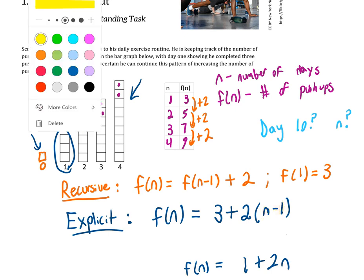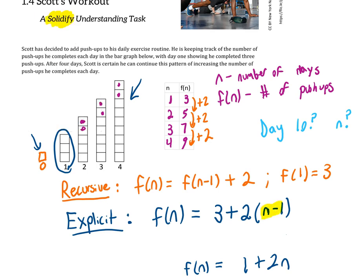The best way to understand why this n minus one is necessary is to look back at the table we originally created. You can see in the second row, how many times have we added two to our original number of three? We had only added it once.